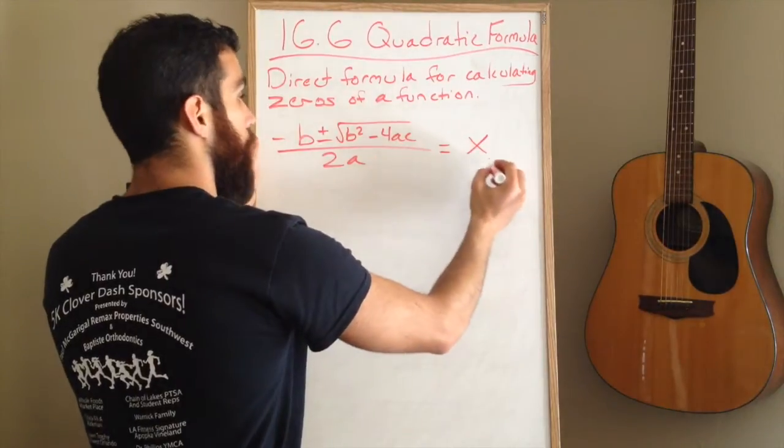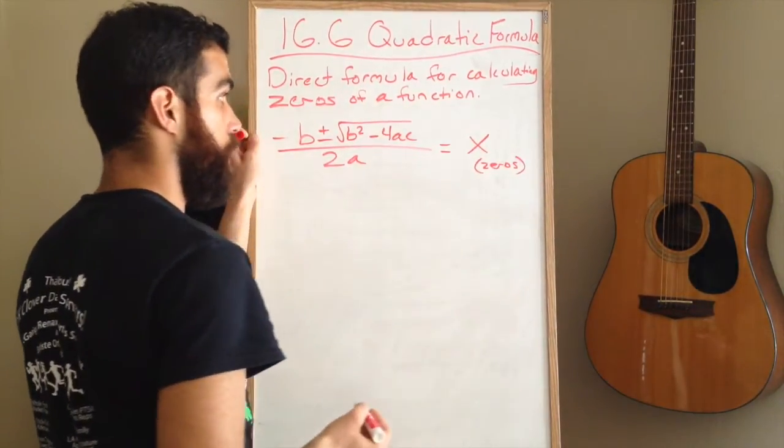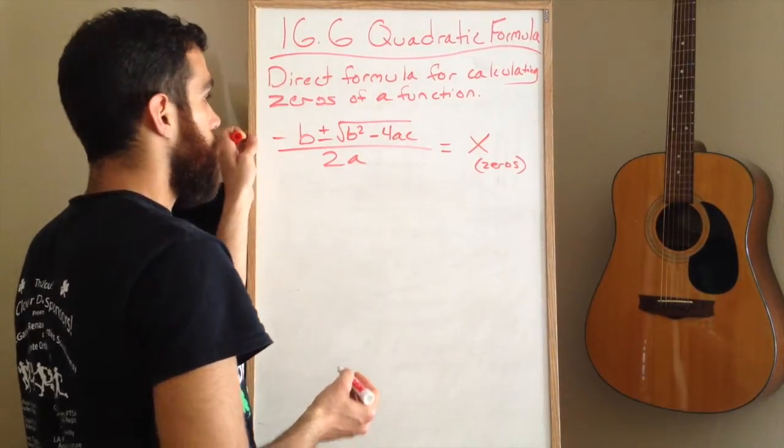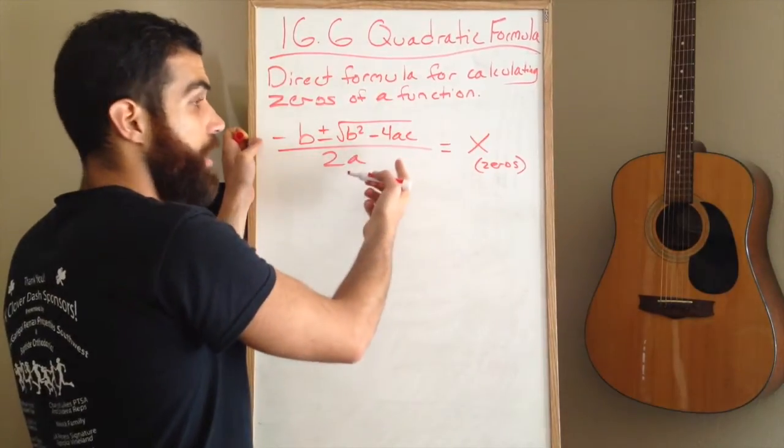This formula is going to give you x, which will be the zeros of the function. So let's do an example, and in order to do that example, we need to first understand what a, b, and c are.